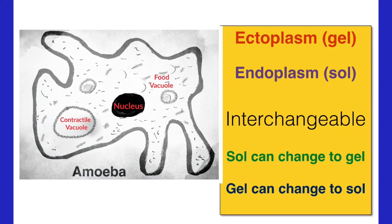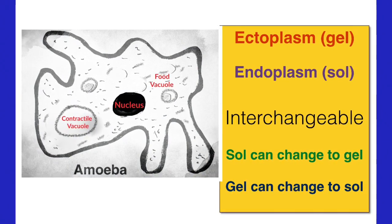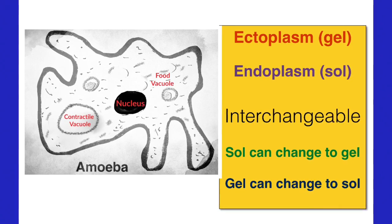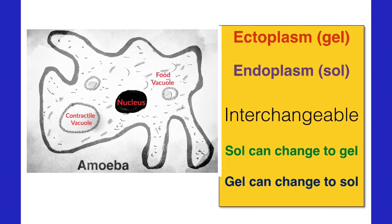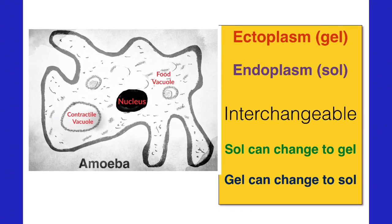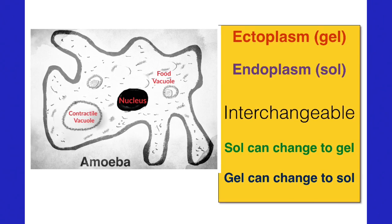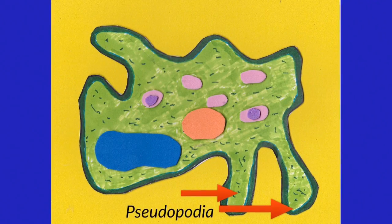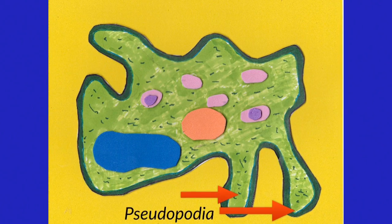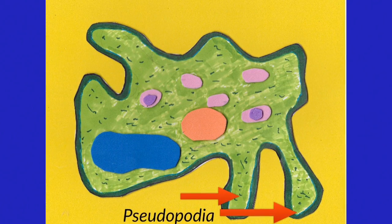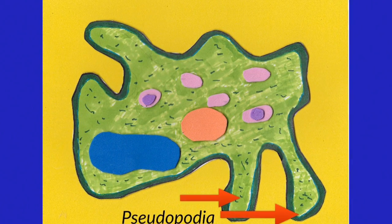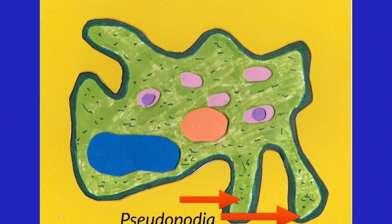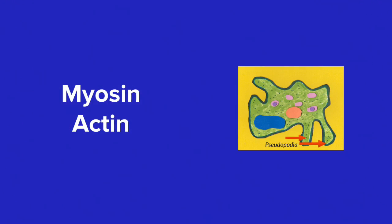The formation of pseudopodia is very complex and you don't have to know the detail of it. However, it's just interesting to note that it all involves the ectoplasm and the endoplasm interchanging, so one becoming the other. This changing of ectoplasm into endoplasm and the movement of cytoplasm causes these pseudopodia to swell and get larger and moves the amoeba along. But none of this could happen without the action of two proteins, myosin and actin, but this is not on your course.